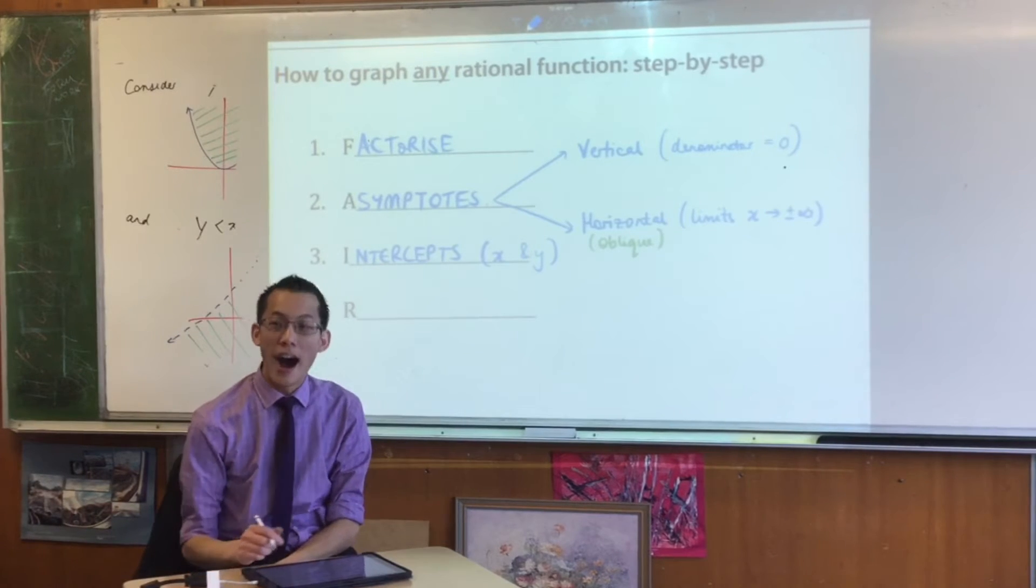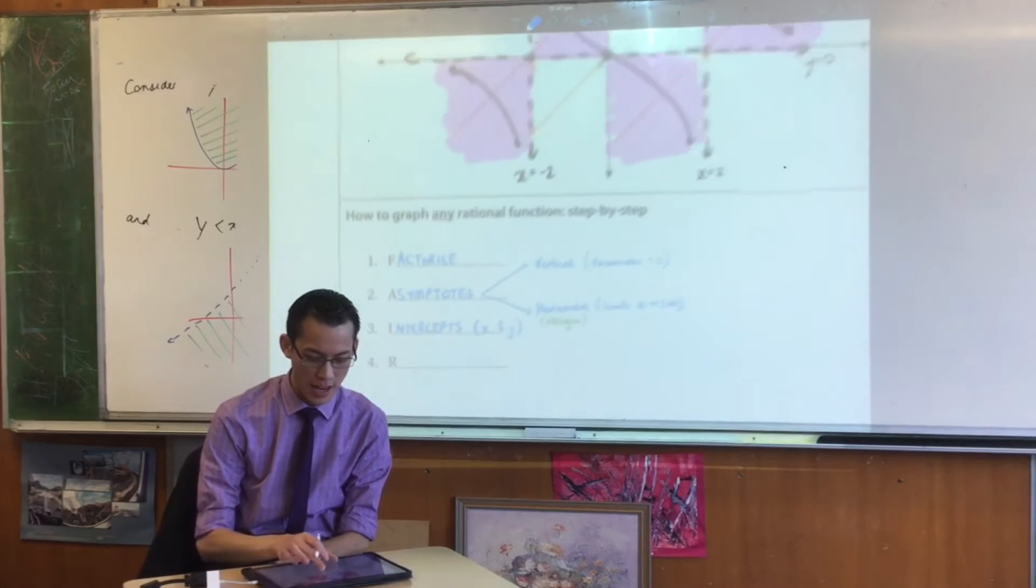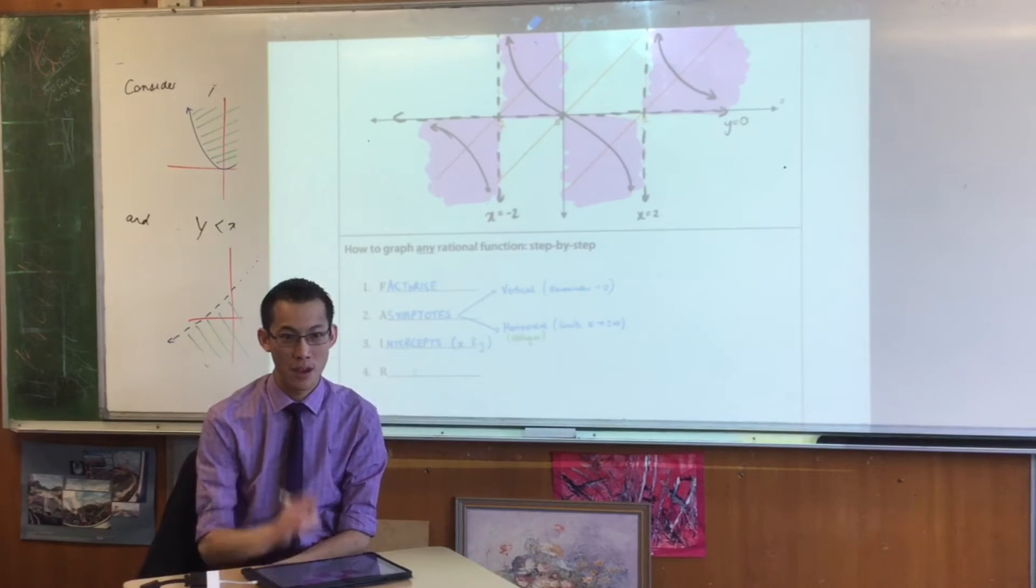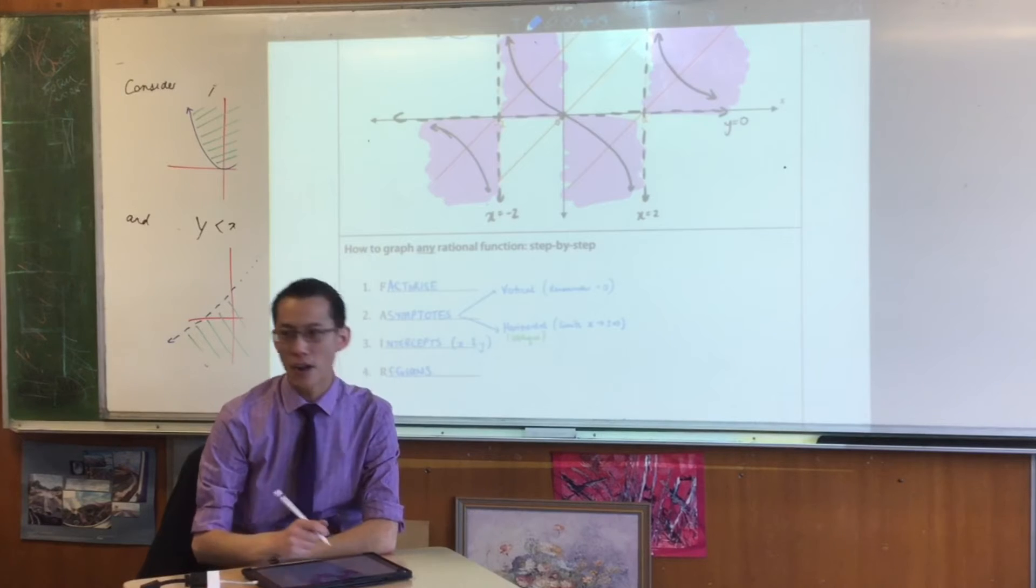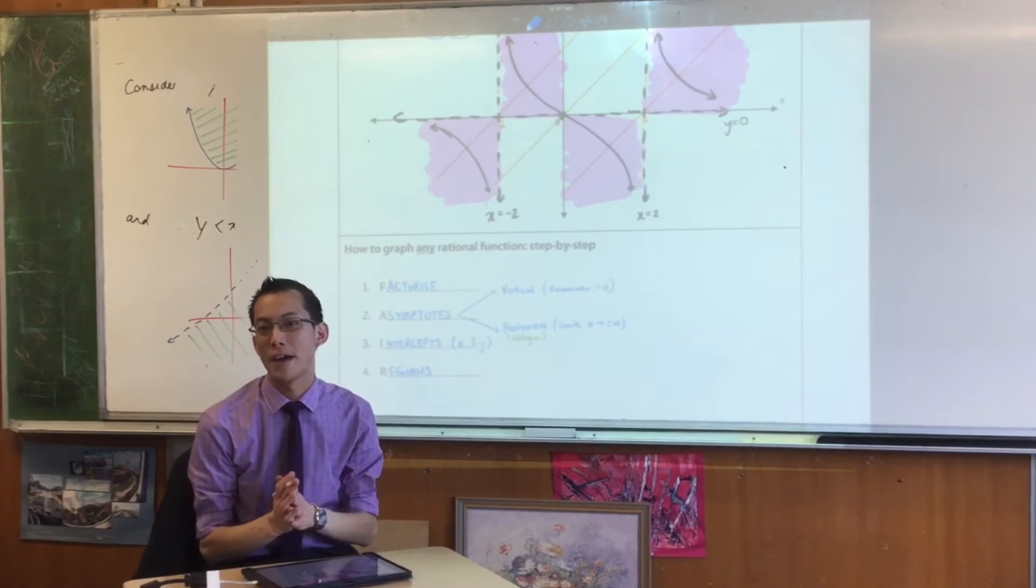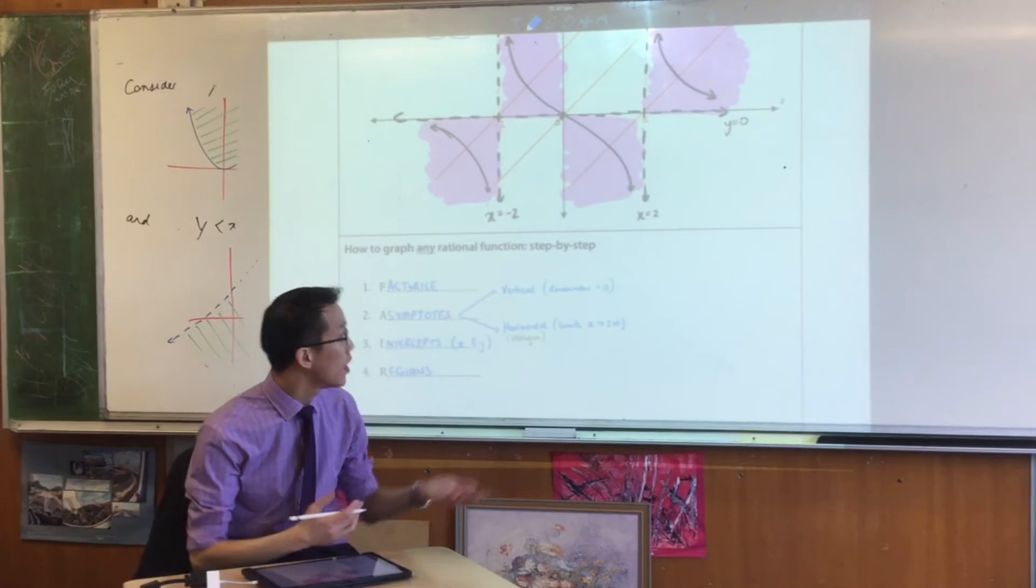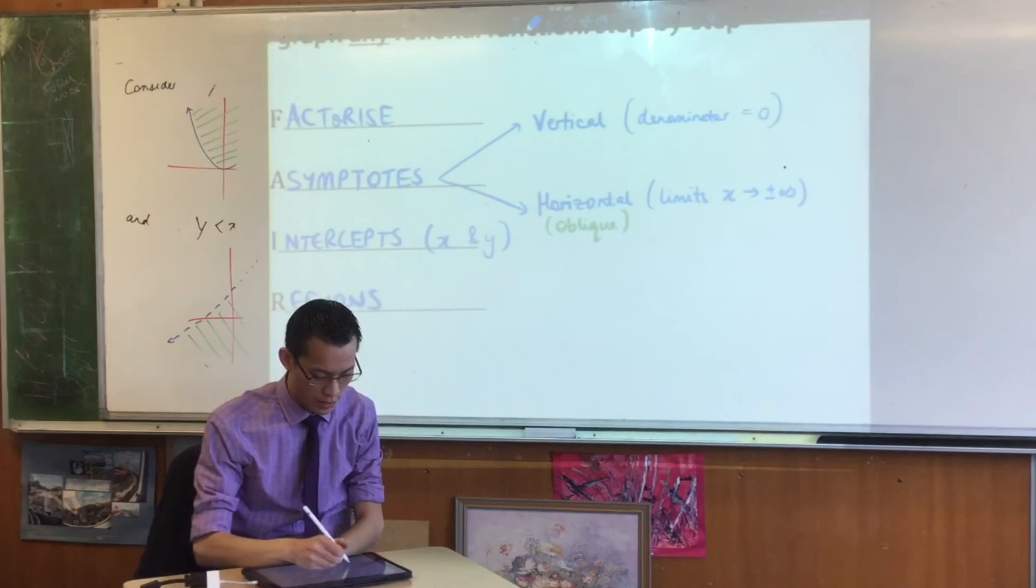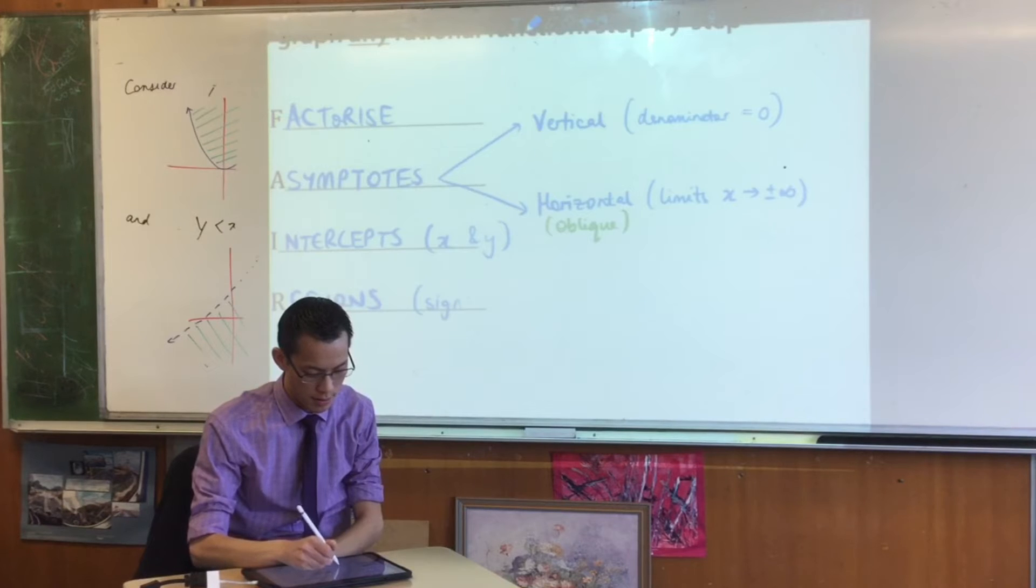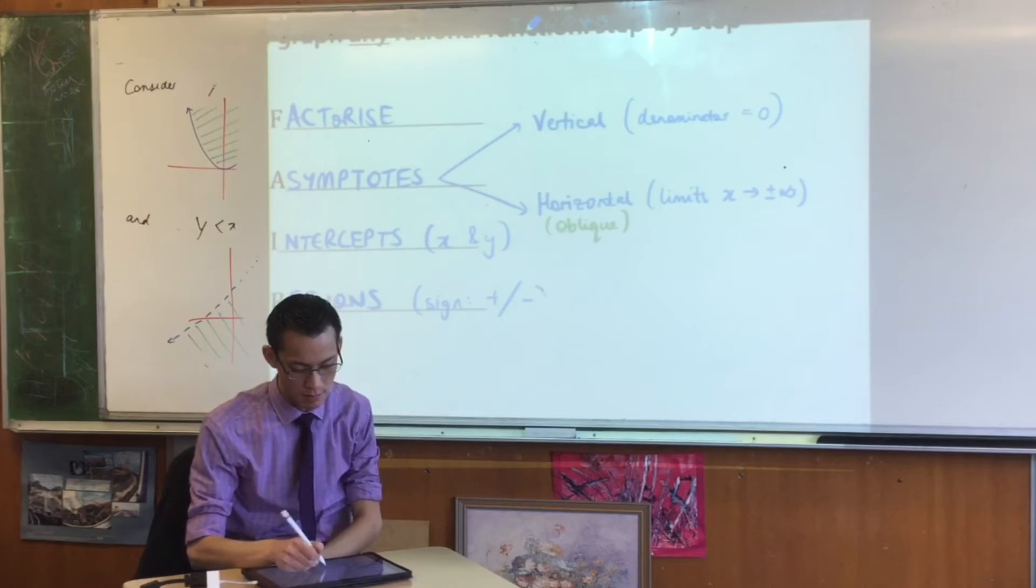Lastly, r stands for what we did up here in pink. What was r? Regions. Thank you. So regions are about the sign of your graph. Are you positive? Are you negative? Shade in the accordion area, and then you know where your ultimate graph has to go through. So this is really about sign. Is it plus or is it minus?